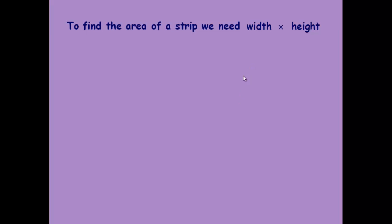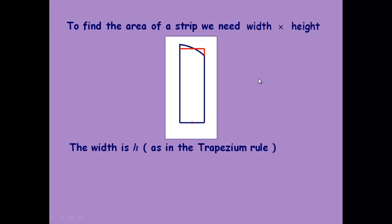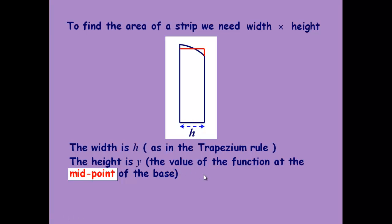Obviously the area of the rectangle is just the width times the height. We tend to use h as the width as we did with the trapezium rule. So it's the bit that's always the same. The strips will all be of equal width. The height is obviously just the y value so we use that y value and we'll get different y values for each rectangle.